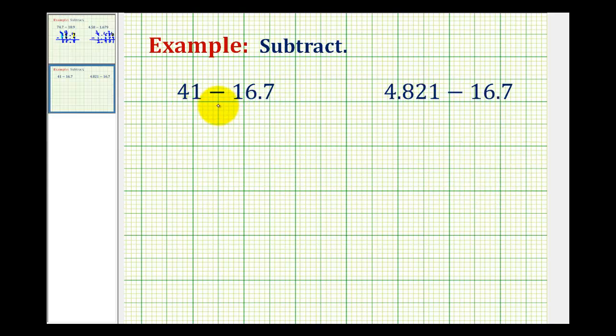In this example, notice we have a whole number minus a decimal. For a whole number, remember the decimal point would be to the right of this one, which will help us line this up vertically. We'll have forty-one, the decimal point here, minus sixteen point seven.